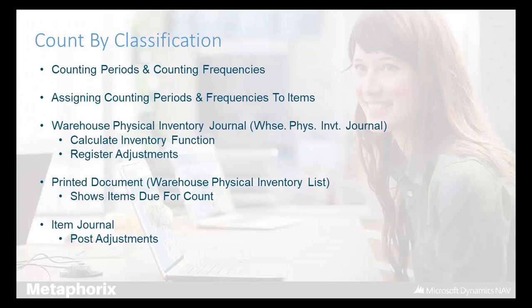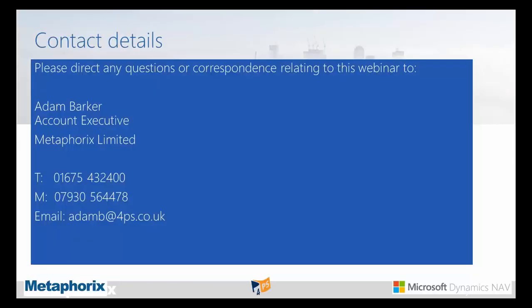That's it for counting by classification. You break your items into categories however you want, assign a count frequency — as often as you like — assign those counting periods and frequencies to items, run the warehouse physical inventory journal to see what's due for count, print the document showing items due, register your changes. If everything's the same, just register. If there are adjustments, change the quantity the same way as when counting full inventory or by location, run your item journal, calculate warehouse adjustments, and post it. It's always the item journal that triggers the adjustment — when you register, no stock actually moves. You have to pull them into the item journal and post the journal.